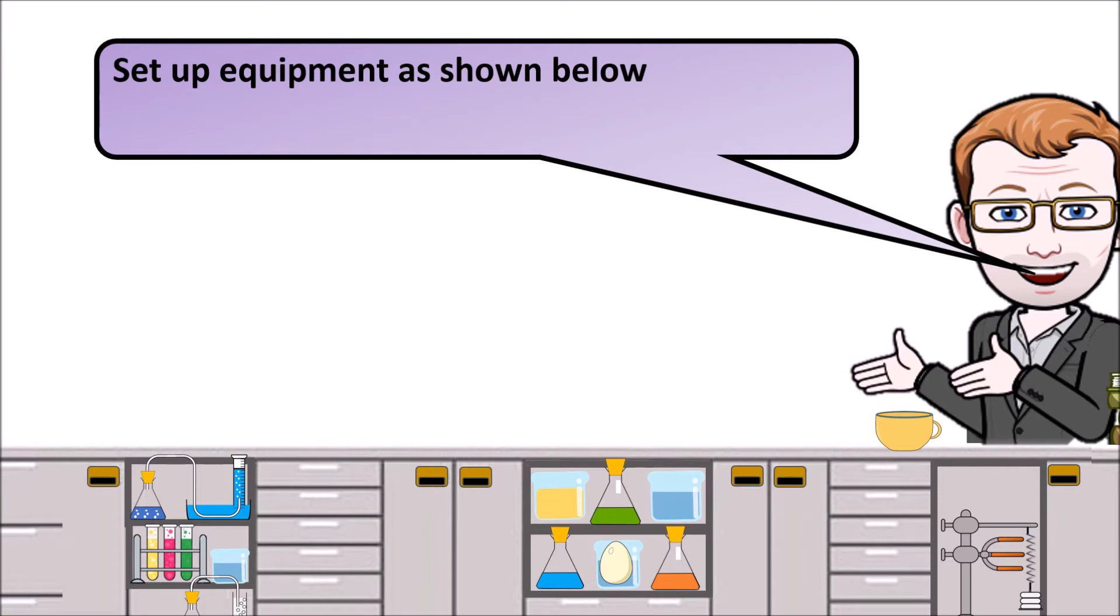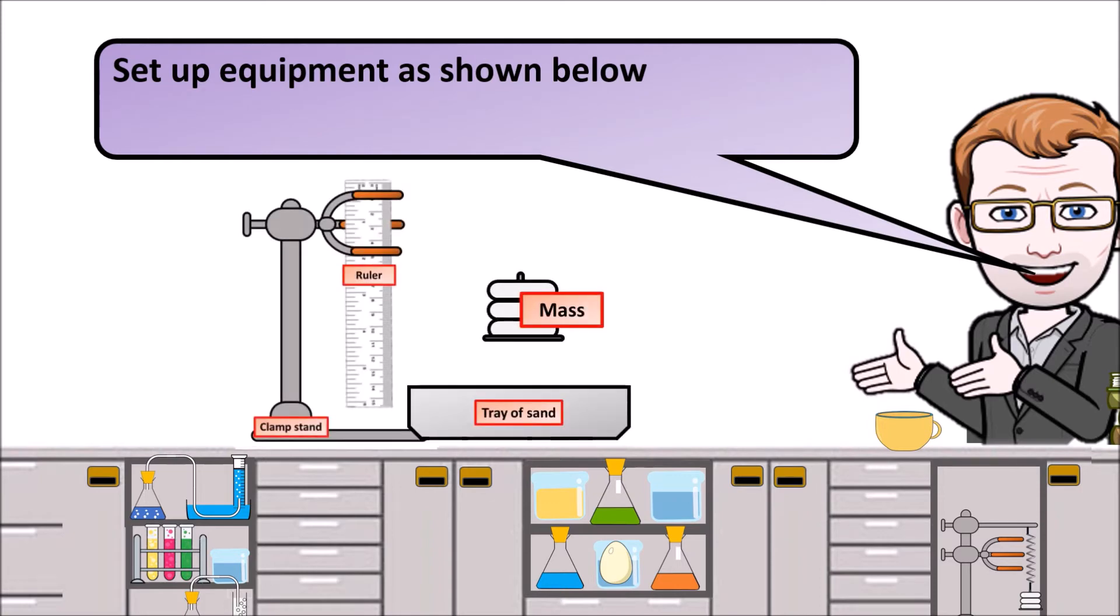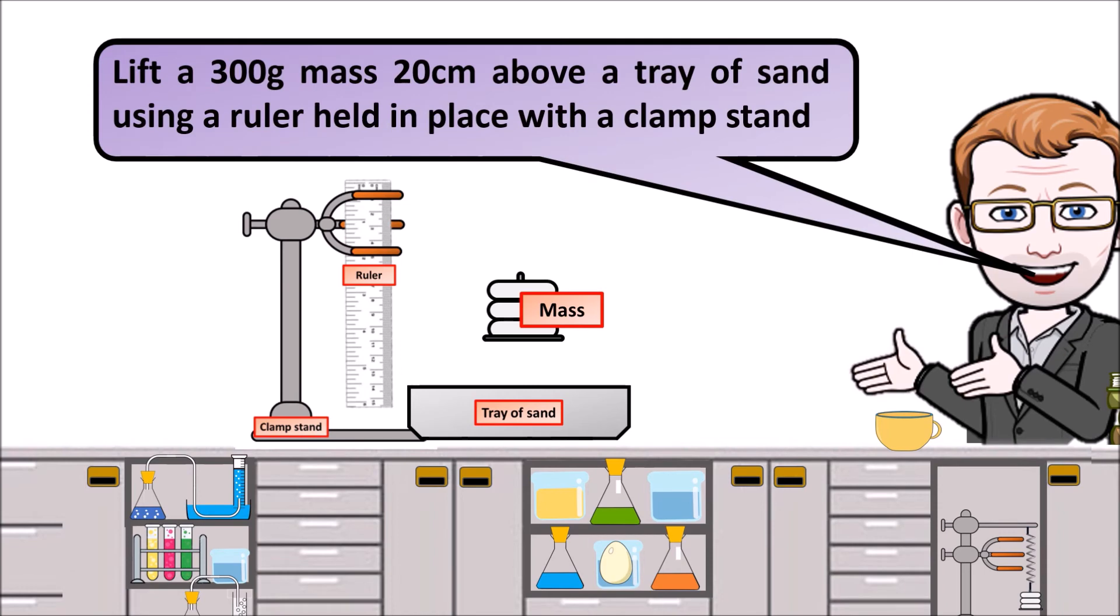Set up the equipment as shown below. You could use a 300 gram mass. Start off by raising it 20 centimeters above the tray, making sure that you measure it with a ruler.